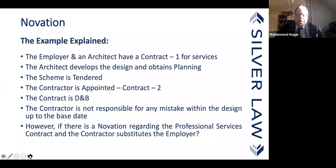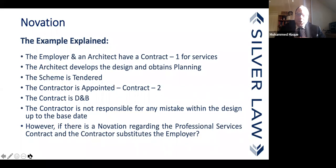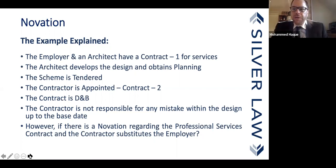Borrowing the language of Lord Denning: in our example, the employer and the professional architect had Contract 1 for professional services. The architect develops the design and obtains planning, the scheme is tendered, the contractor is appointed — that is Contract 2. In a design-and-build scenario, the contractor has responsibility to develop and complete the design, building on designs initially created up to a certain level.